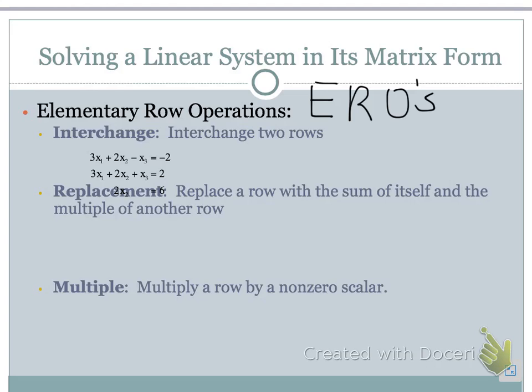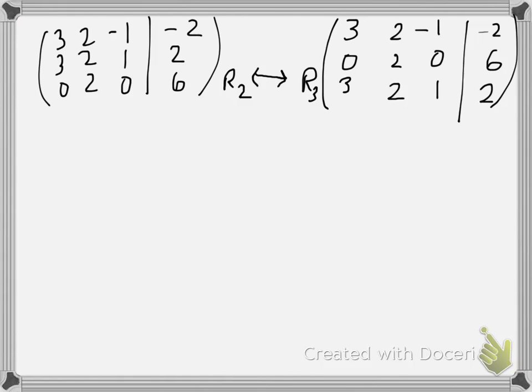The first thing we're going to look at is if we interchange two rows. So if we interchange two rows in our matrix, it does not change the solution to the system. So we notice this is the original system that we saw on the last slide. And so we use this notation here, R2 interchange with R3. And so what do we notice here is that the second and the third row have been interchanged.